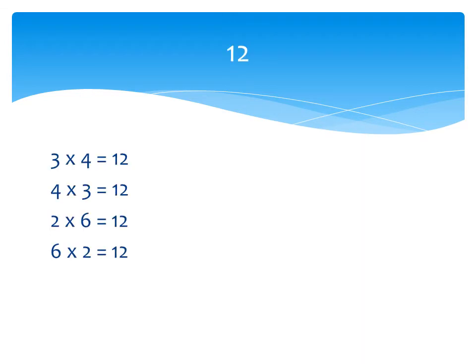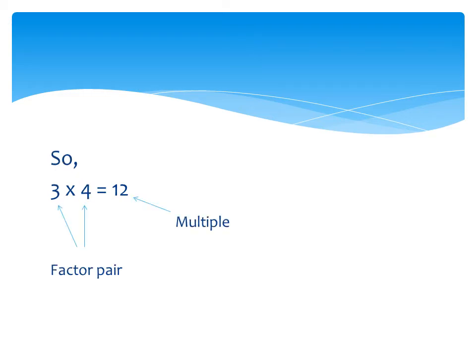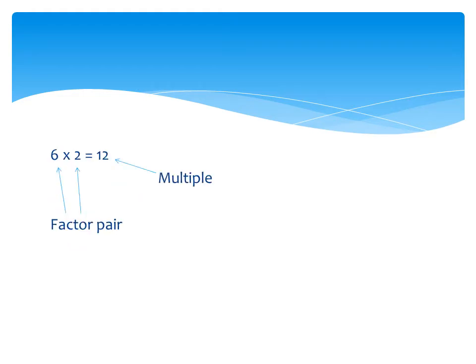For example, if we think about the number 12, with 12 being the multiple, we can think of pairs of numbers that when multiplied together make 12. Here you can see the pairs of numbers that when multiplied together make 12. With 3 times 4 equals 12, 3 and 4 is the factor pair and 12 is the multiple. And with 6 times 2 equals 12, 6 and 2 is the factor pair.